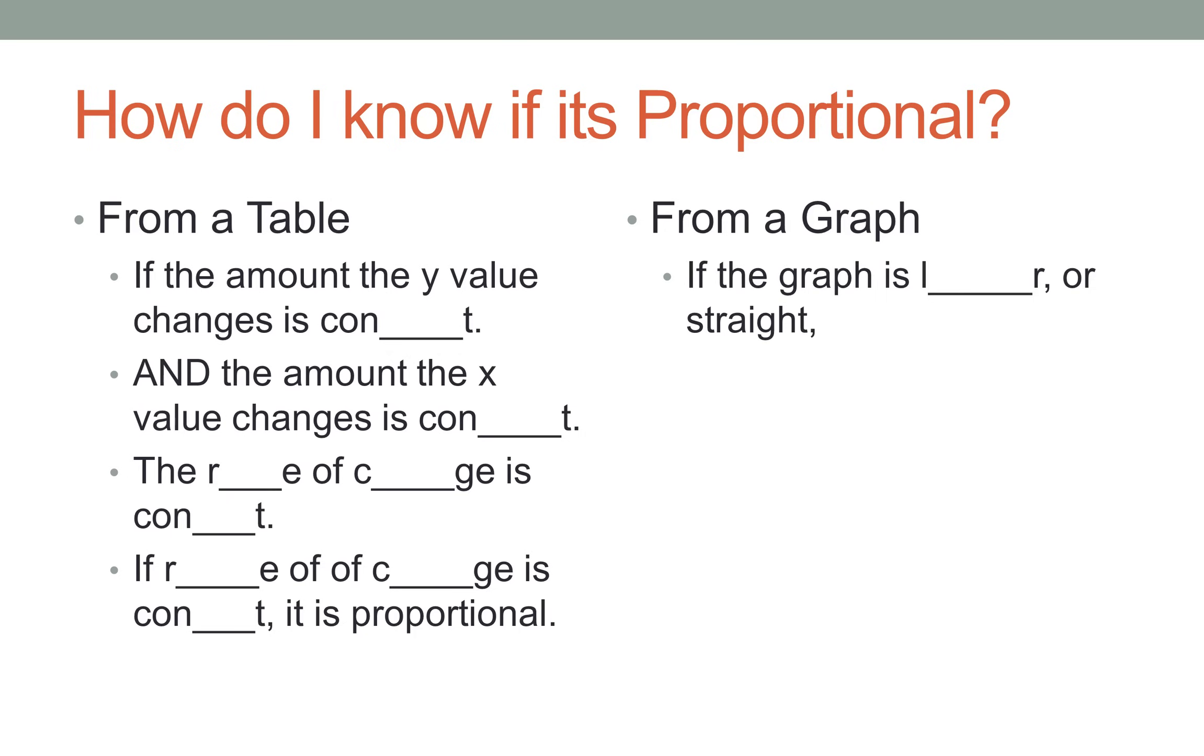From a graph, how do I know if it is proportional? If the graph is blank or straight, then the relationship is blank and the blank of blank is blank. All right, cool. So guys, look back in the video. It's there. Seriously. Pause the video. Write this down in your notes. The answers are all right there.